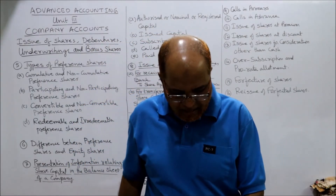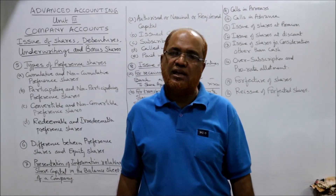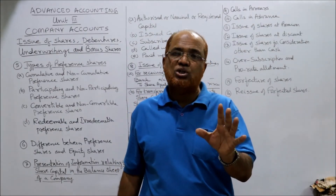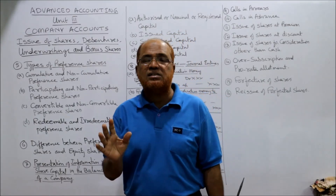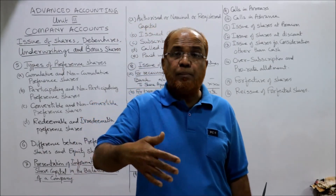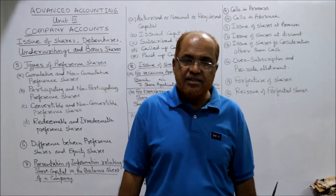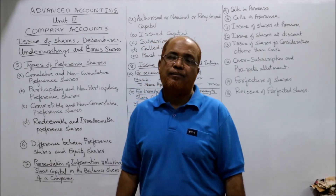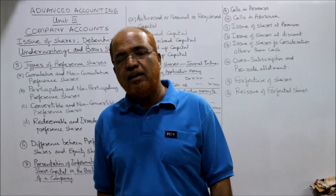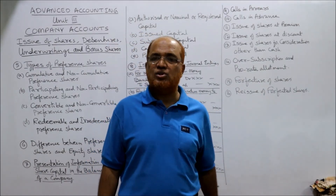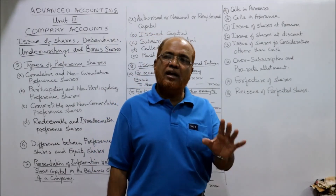Calls in advance arises in cases of over-subscription. For example, if a shareholder applied for 10,000 shares and paid application money for all 10,000, but the company allotted only 6,000 shares, the excess application money for 4,000 shares is not refunded — it is adjusted against future allotment or call money. This is called calls in advance. No dividend is paid on calls in advance. Under Table F of the Companies Act, interest on calls in advance is paid to shareholders at 12% per annum.